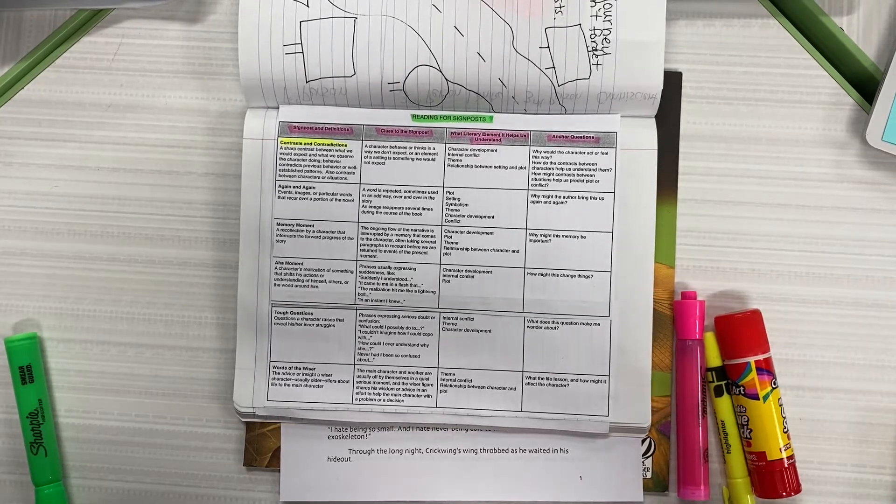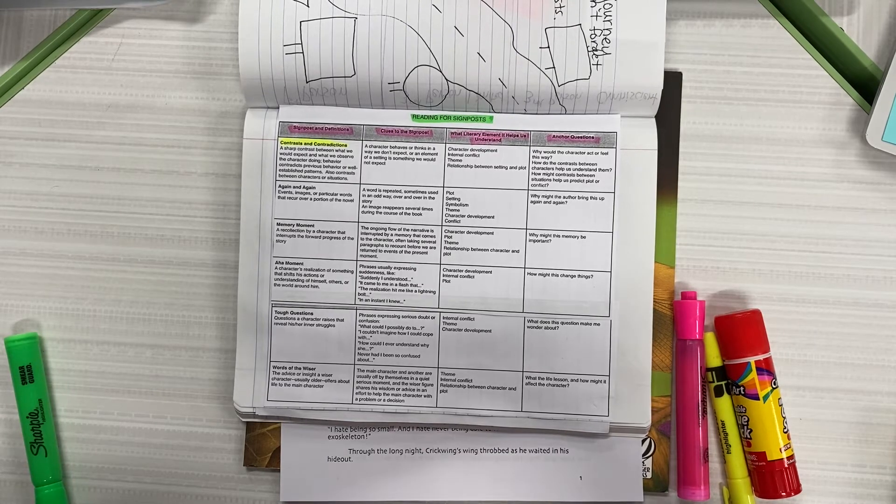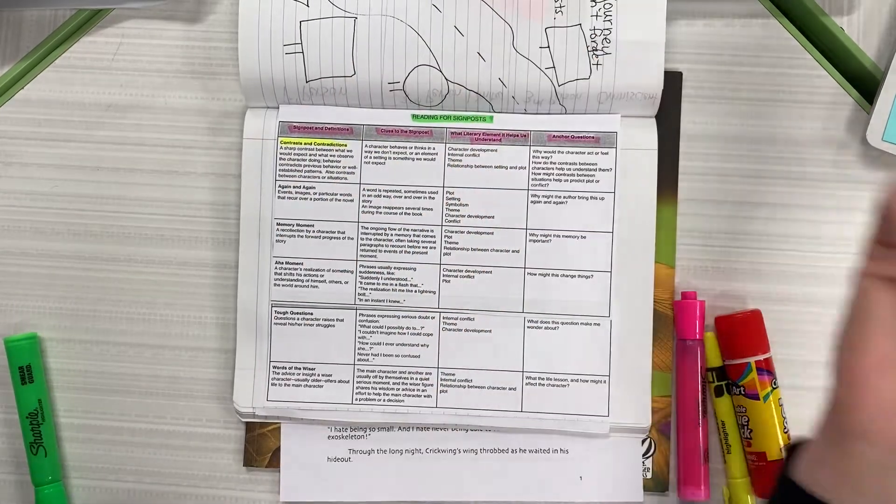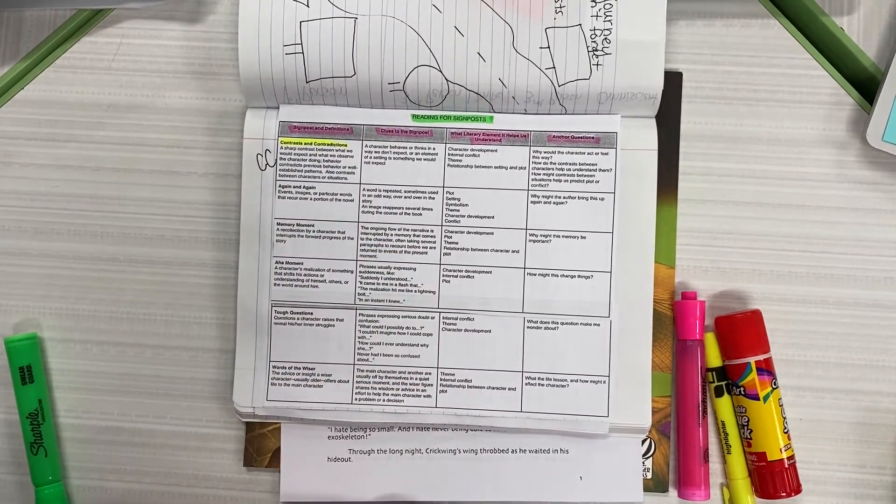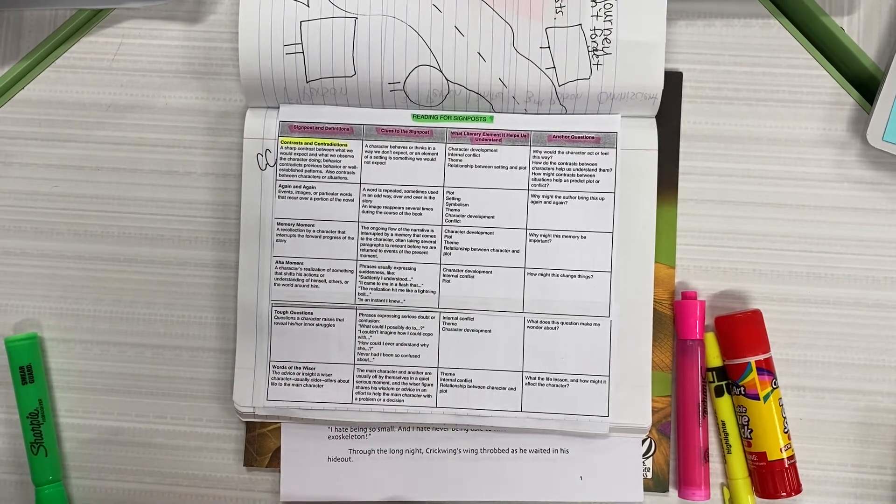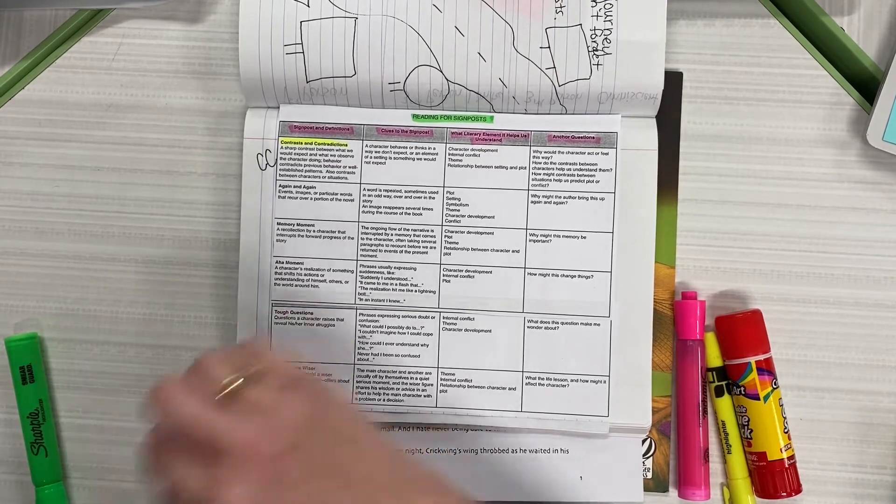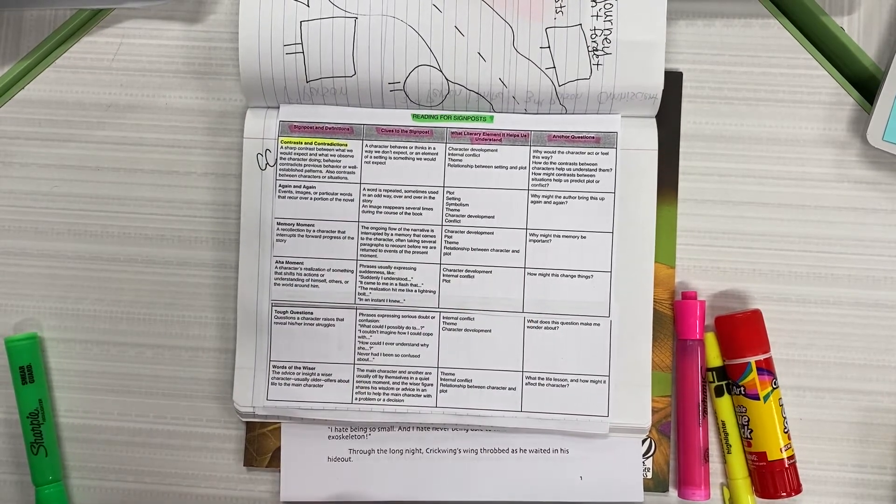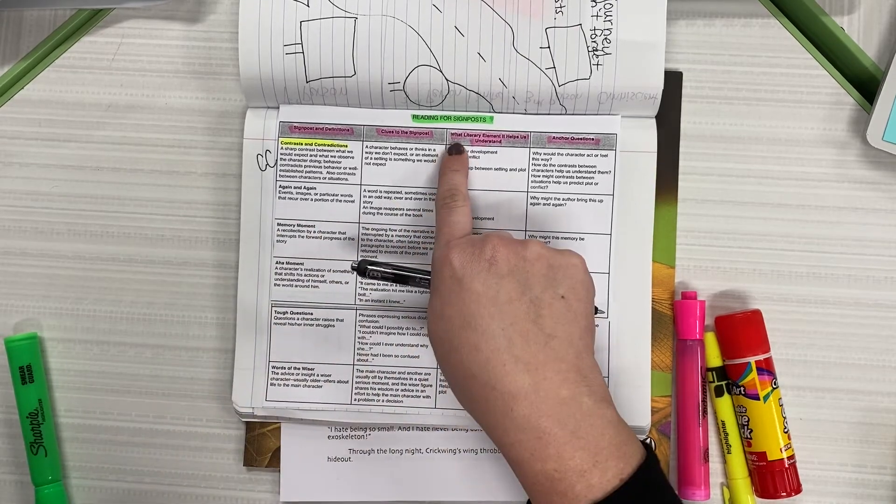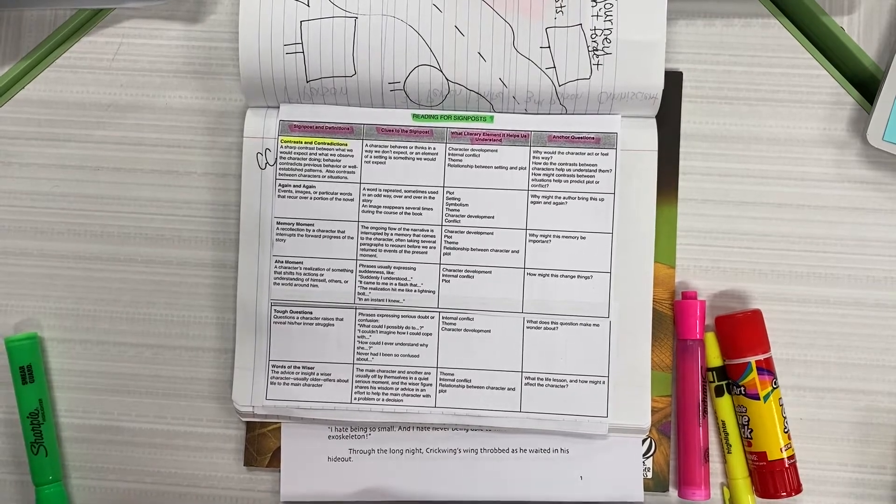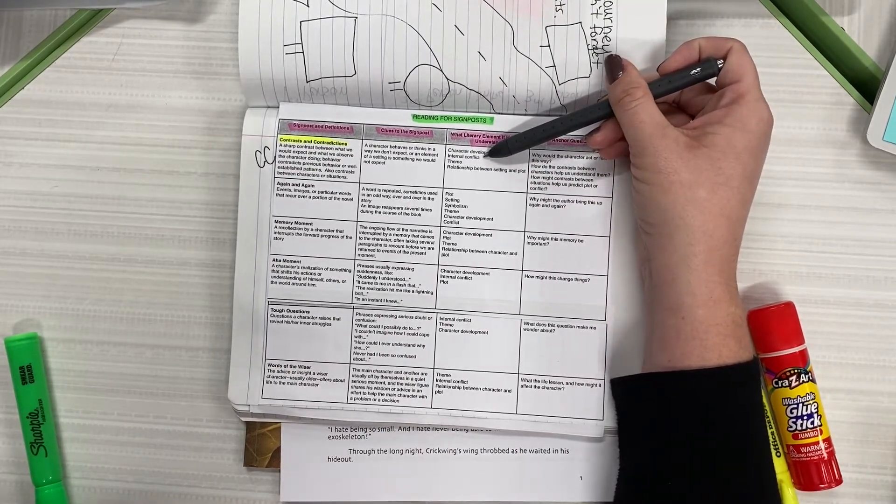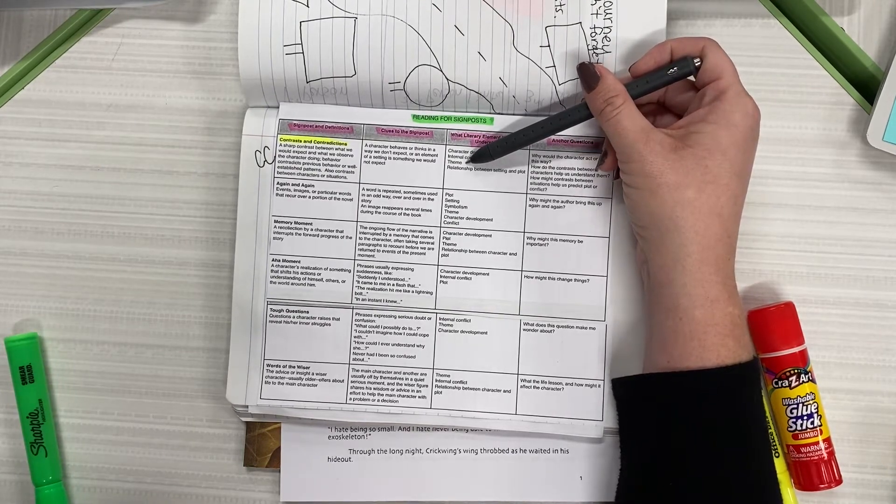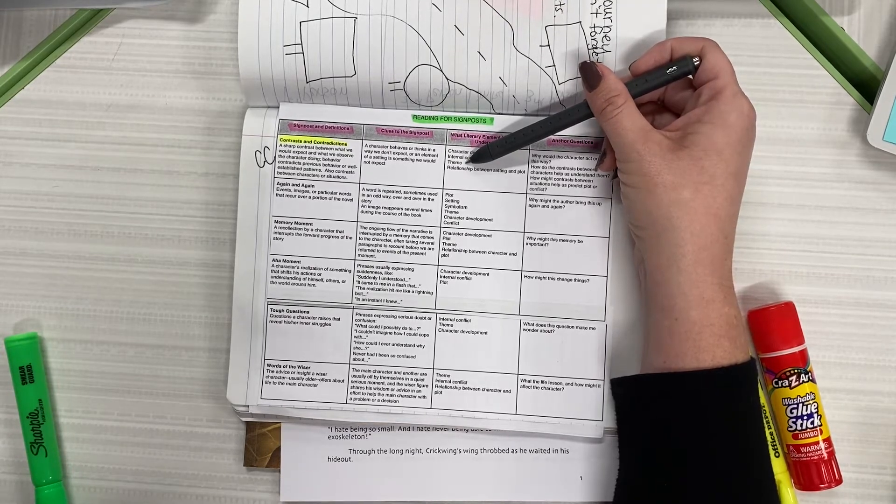If we are being asked to annotate, which means we're marking up our text or making notes to make sure we understand there's important information, we use the annotating symbol which is the two letters CC. Write that in your notebook. As we look at our story, write the letter CC if you see that a character is acting in a different way than we had previously expected. The clues to the signpost is a character behaving or thinking in a way we don't expect or an element of a setting is something we would not expect.